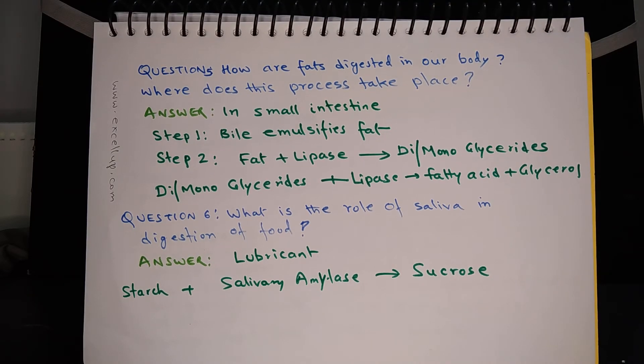Question 5: How are fats digested in our body? Where does this process take place? You may recall that most of the digestion takes place in small intestine and that is where digestion of fat takes place. The digestion of fat happens in two steps. The first step is emulsification of fat by bile. Bile breaks down fat into small particles so that it becomes easier for enzymes to act on fat.